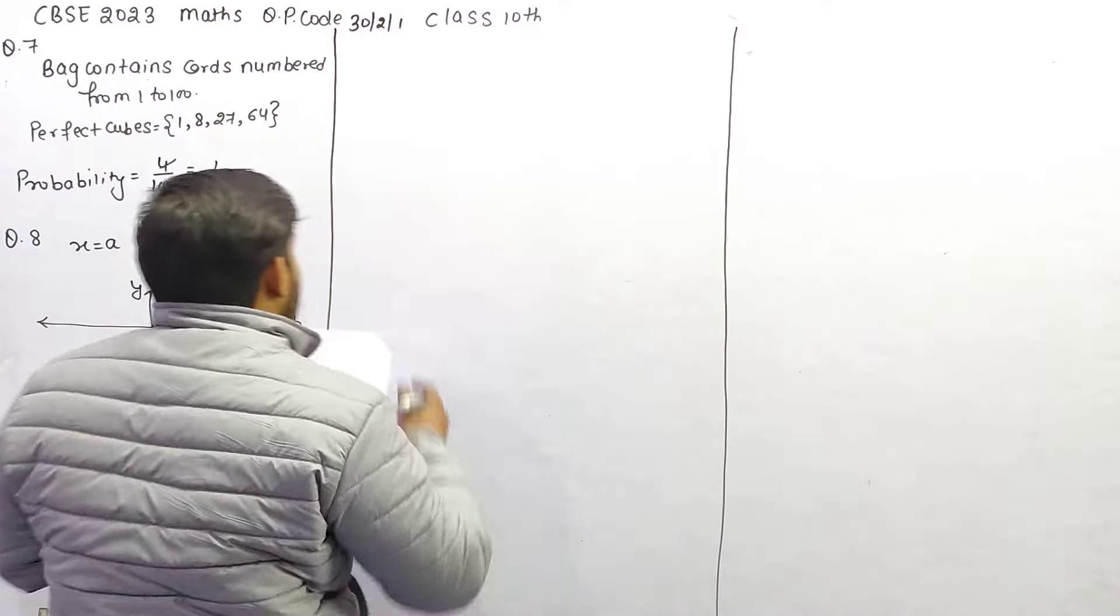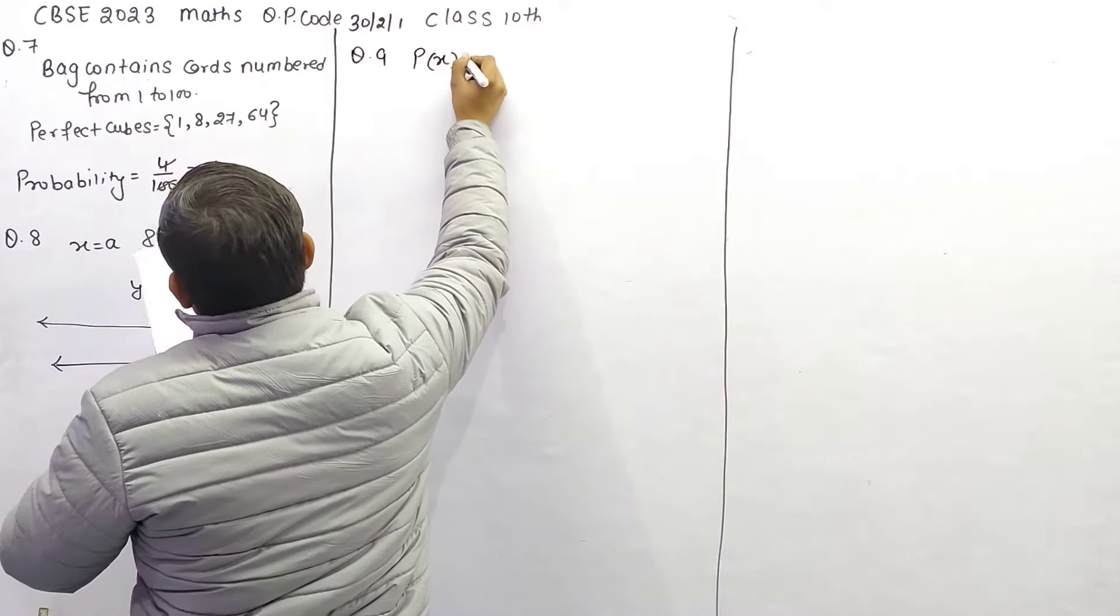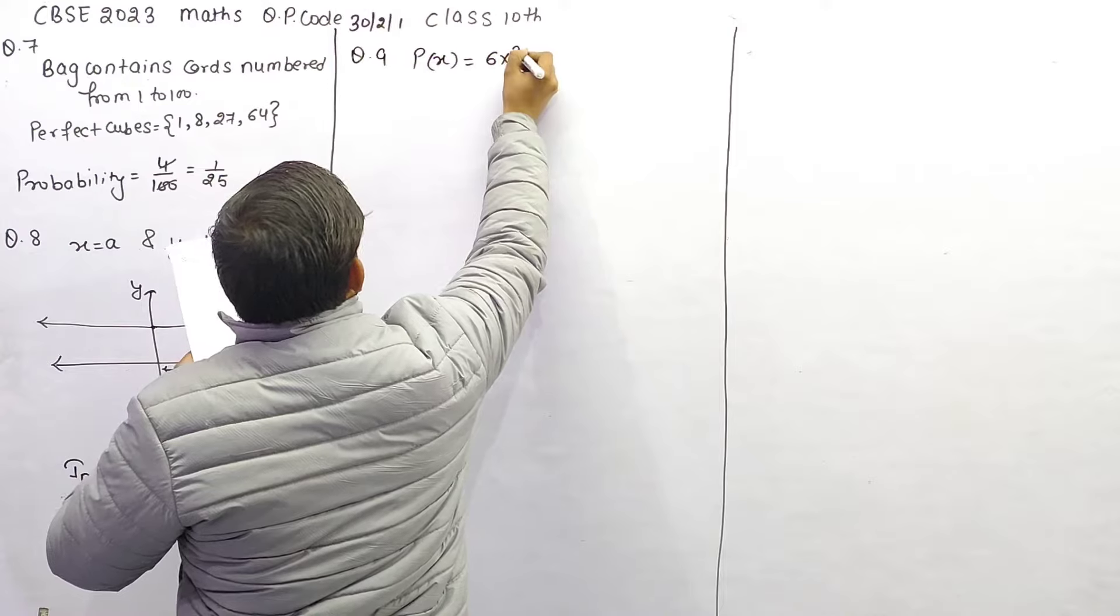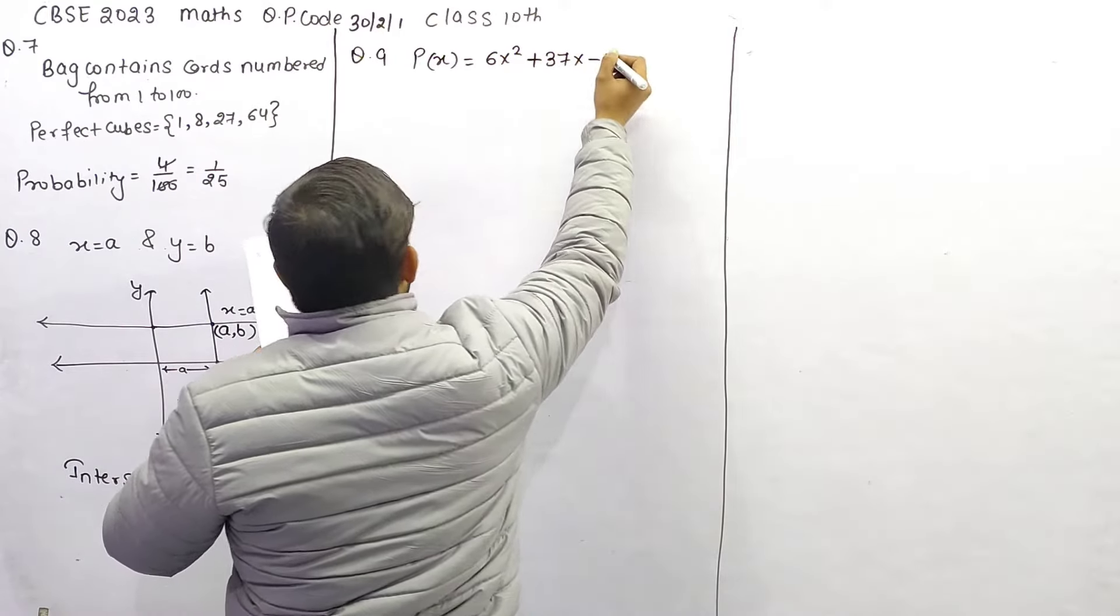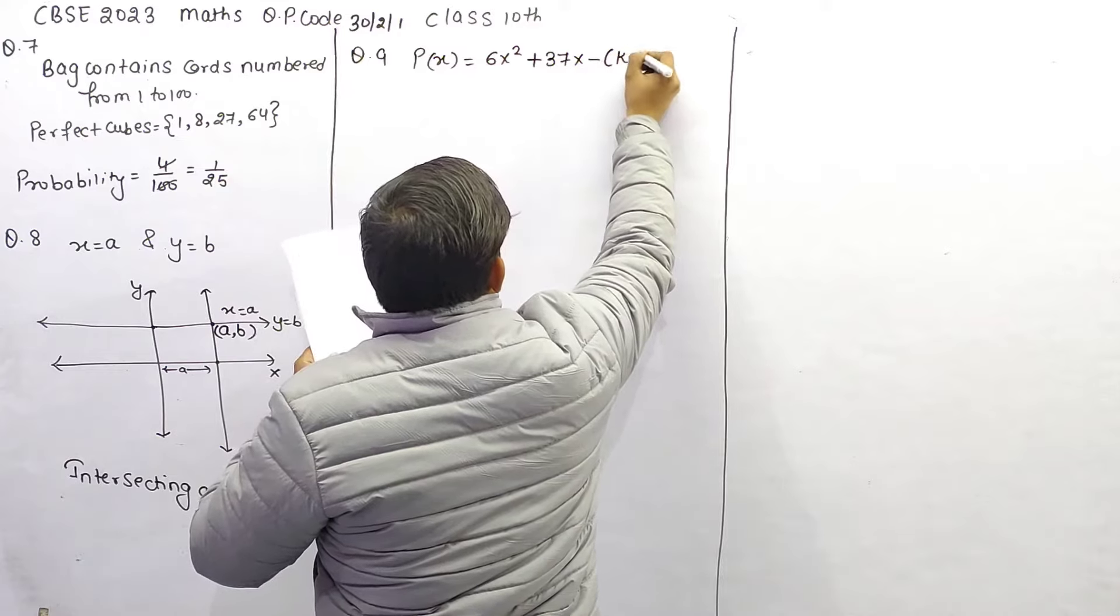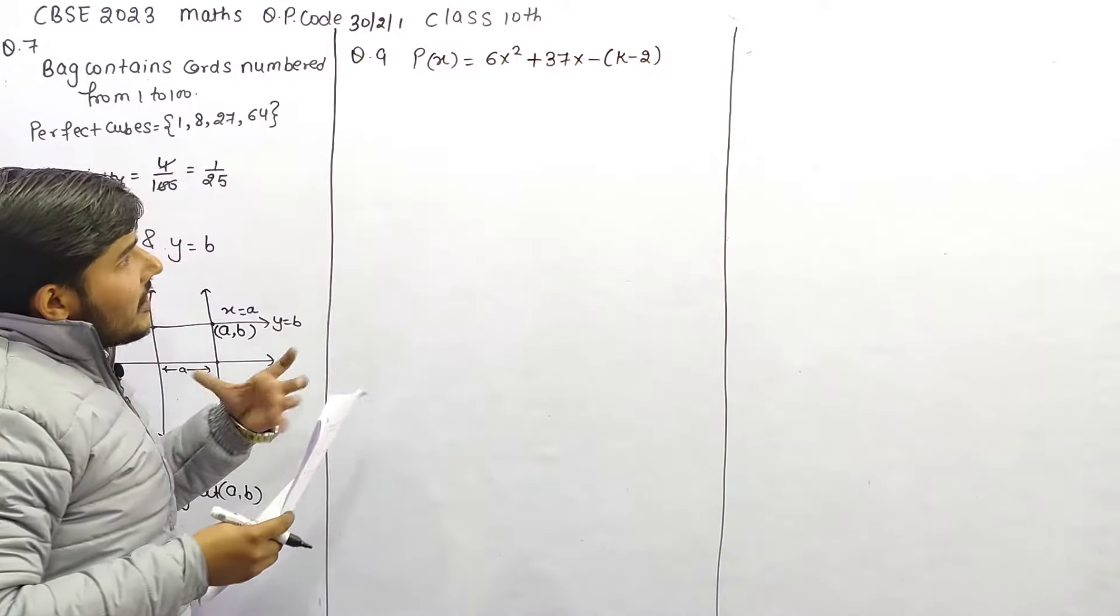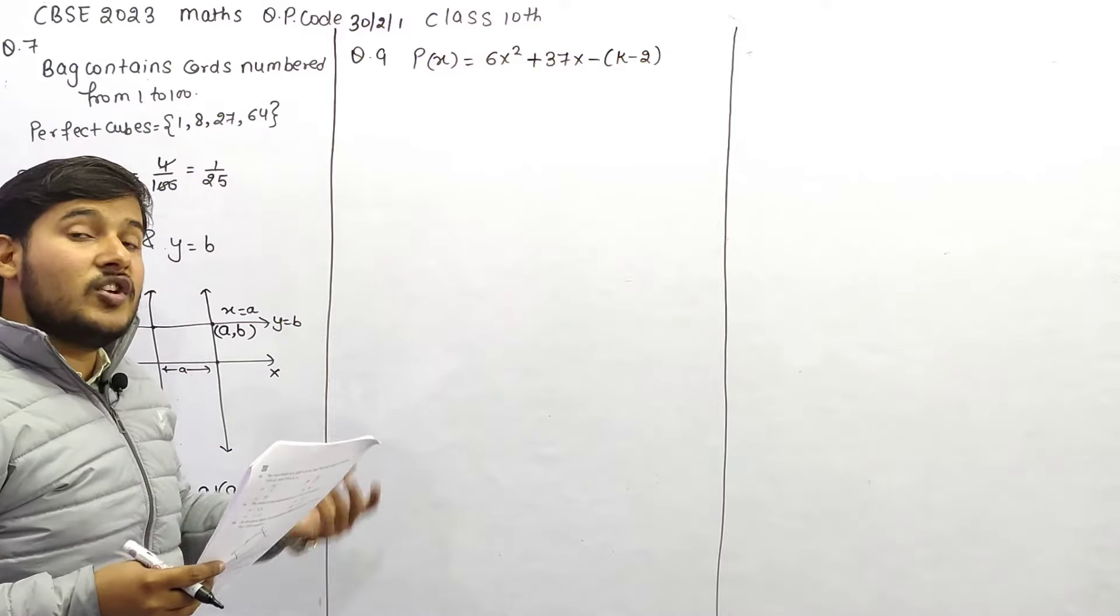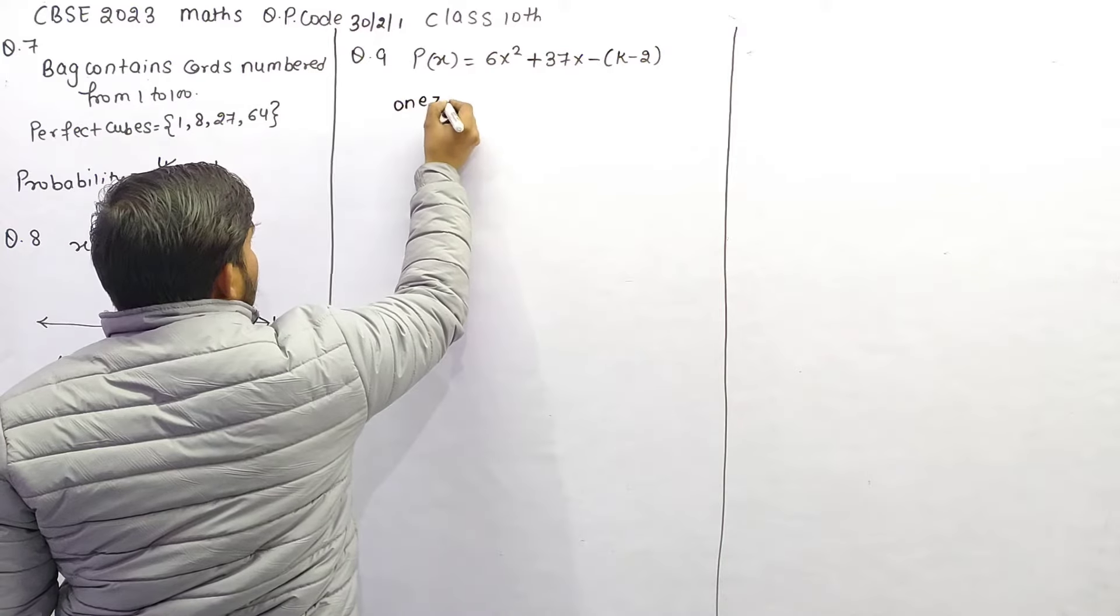We had a polynomial, हमारे पास एक polynomial है that is, P(x) is equal to 6x square plus 37x minus k minus 2, और वो कह रहा है कि जो इसके zeros हैं, वो reciprocal of each other हैं, अगर one zero इसका क्या है?